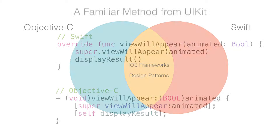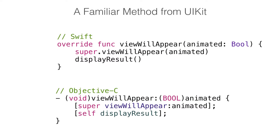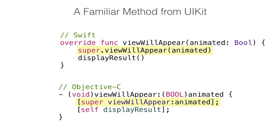Let's take a look at an example. The following code snippets are taken from a custom view controller class that inherits from UIViewController. In the code snippet here, you can see the familiar UIViewController method, viewWillAppear. The Objective-C syntax will certainly seem foreign at this point, but let's focus on what we can find in common between the two implementations. Just as you would do with Swift, you start out by calling the viewWillAppear method of the super class.